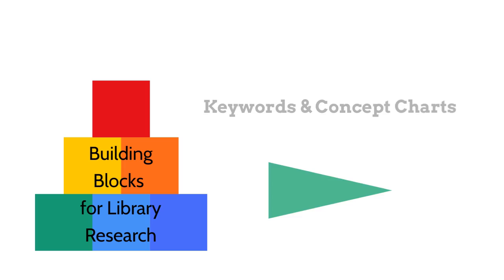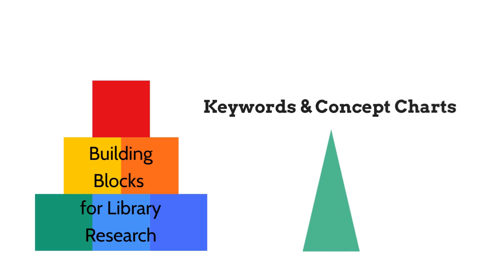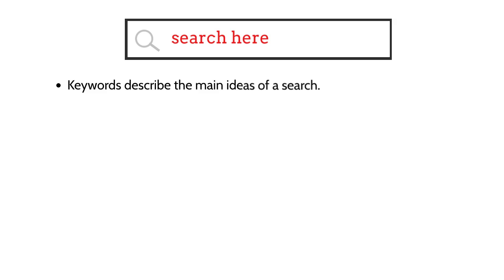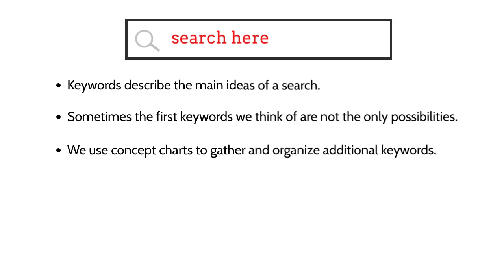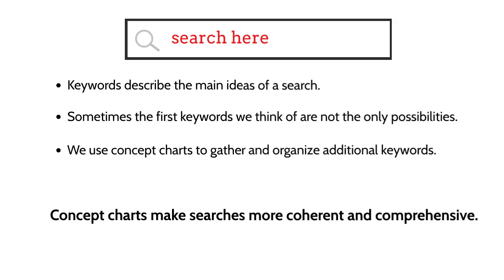In this video, you'll learn about two online search building blocks: keywords and concept charts. Keywords describe the main ideas of a search. Sometimes the first keywords we think of are not the only possibilities. We use concept charts to gather and organize additional keywords. Concept charts make searches more coherent and comprehensive.